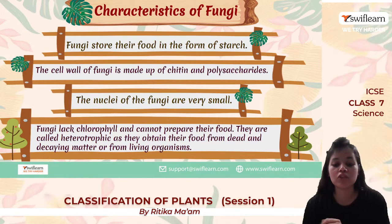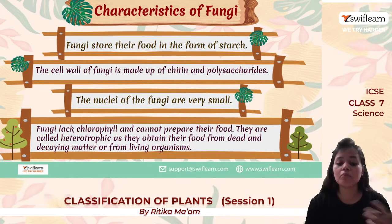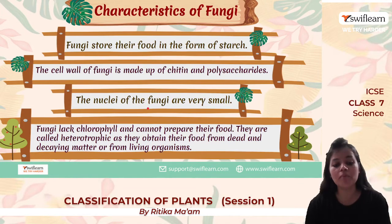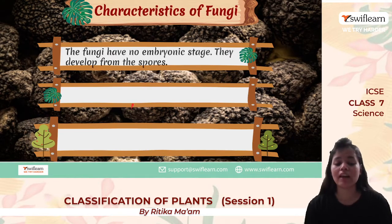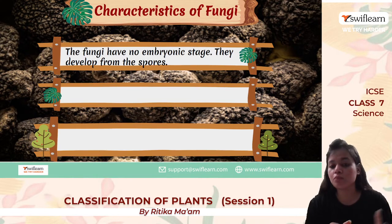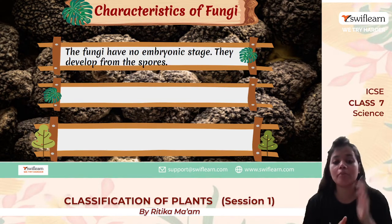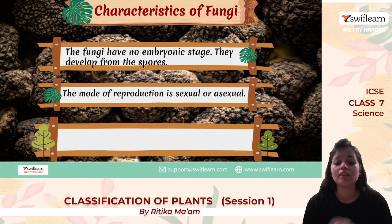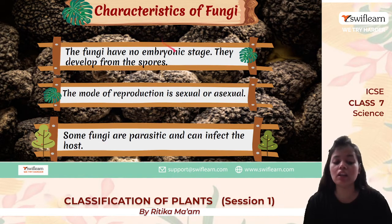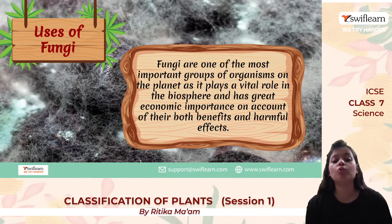Fungi lack chlorophyll and do not prepare their own food, so they are heterotrophic — dependent on other organisms for their food needs. They obtain their food from dead and decaying matter and from living organisms. They have no embryonic stage, meaning they develop directly from spores, unlike plants which grow from an embryo. Their mode of reproduction can be sexual or asexual. Some fungi are parasitic and can infect a host.